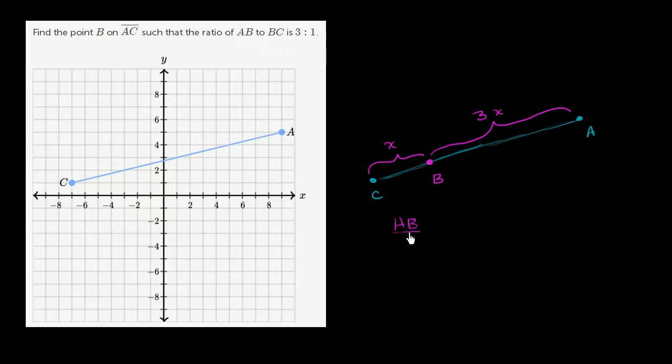It would be AB to BC is going to be equal to 3x to x, which is the same thing as 3 to 1.